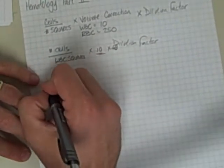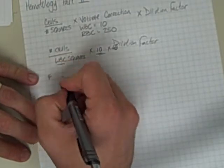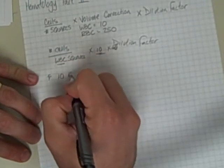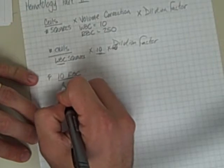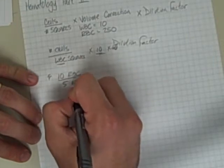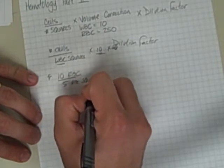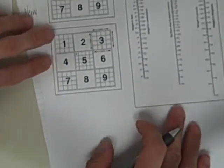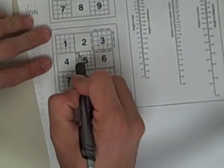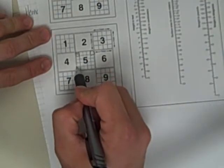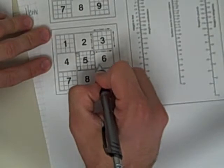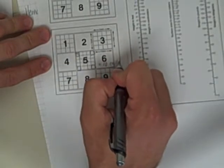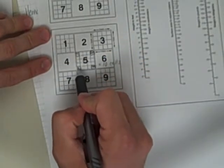So the part where this comes tricky is when you're told, hey, you counted, let's say for example, 10 red blood cells in five red blood cell squares. So you look at this and you say okay, they counted five of these red blood cell squares, and they counted ten cells.